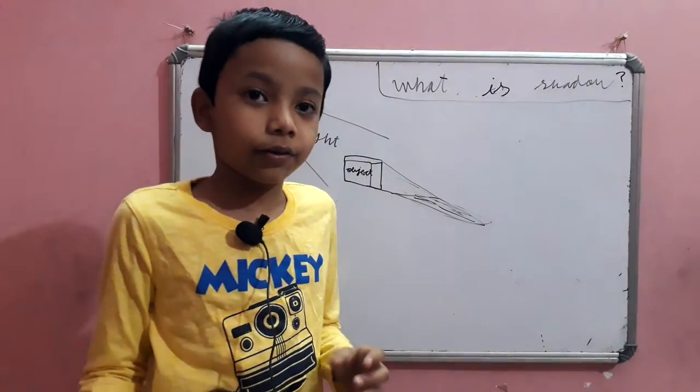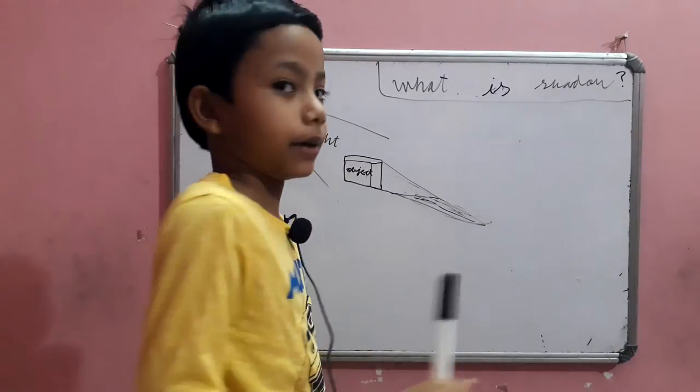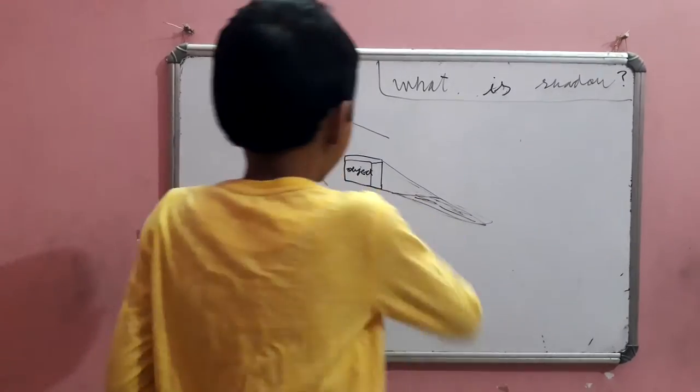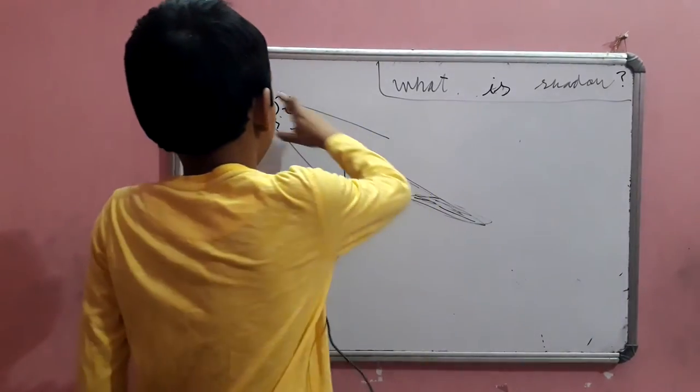You know what shadow means? No worries, I will explain. So, here is an object, and here is the sun.